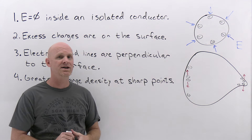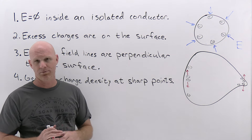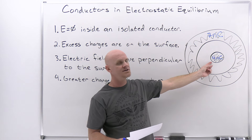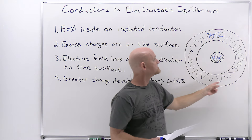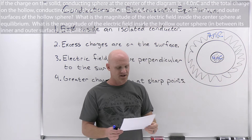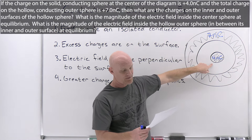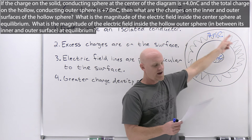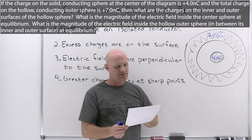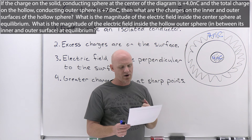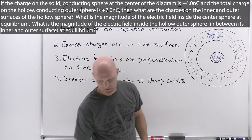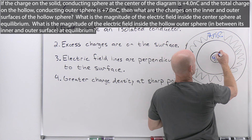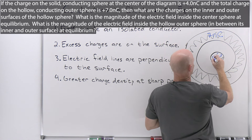So there are our four rules for conductors in electrostatic equilibrium. Let's do one example problem. This question involves two conductors: a solid conducting sphere at the center and a hollow spherical shell around it. The question says if the charge on the solid conducting sphere is positive 4.0 nanocoulombs and the total charge on the hollow conducting outer sphere is positive 7.0 nanocoulombs, then what are the charges on the inner and outer surfaces of the hollow sphere?